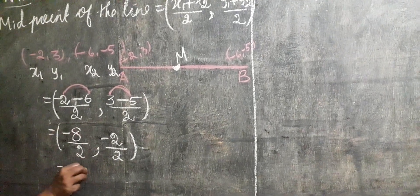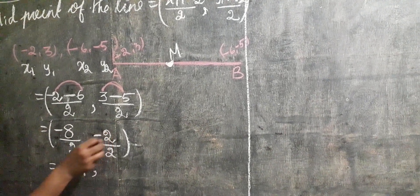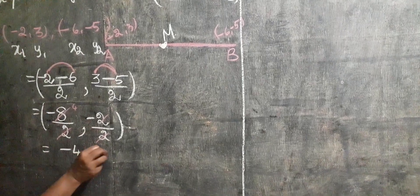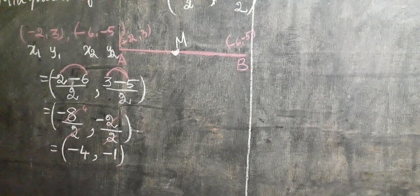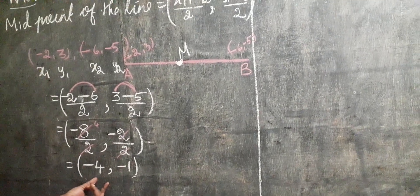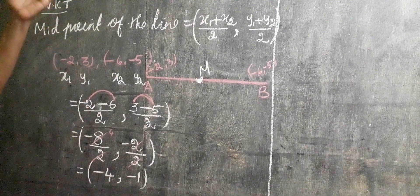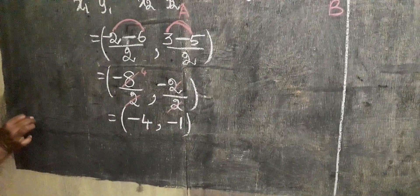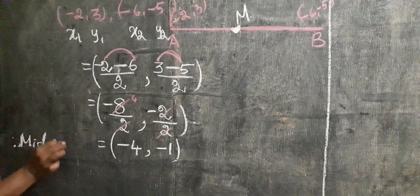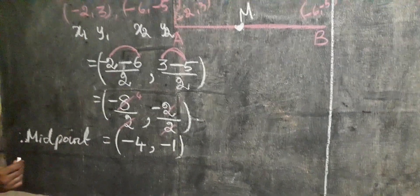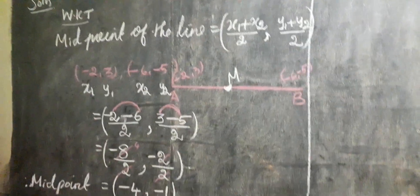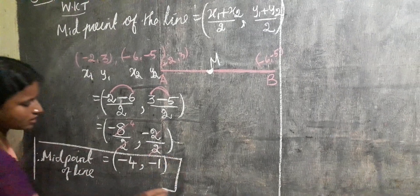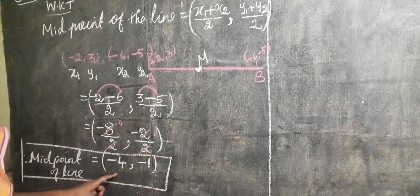Cancel the values: minus 8 divided by 2 gives minus 4. Cancel: minus 2 divided by 2 gives minus 1. Therefore, the midpoint of the line segment is minus 4, comma minus 1. This is very easy — if they ask for the midpoint, and you know the formula, you can very easily find the answer. The midpoint is minus 4, comma minus 1.